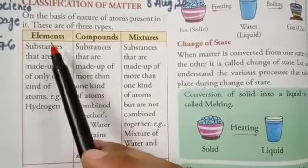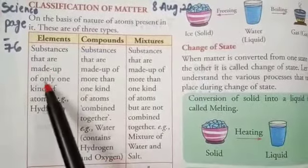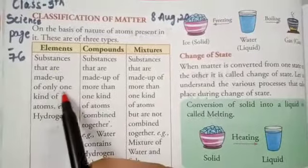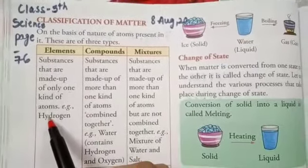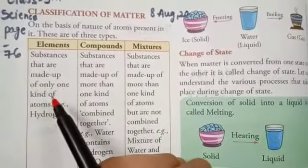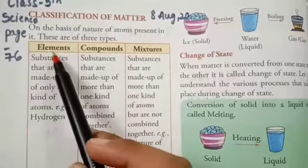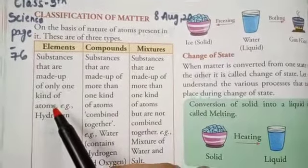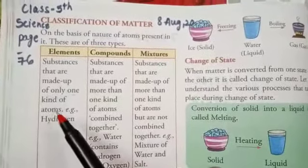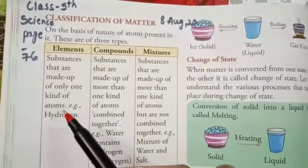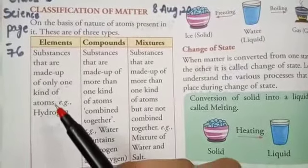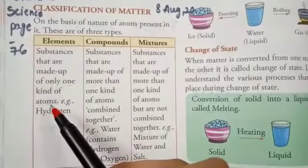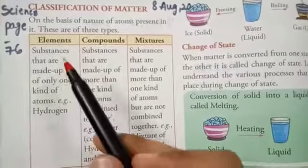The first type is elements. What are elements? Elements are substances that are made up of only one kind of atoms. Atoms are the smallest unit of matter. Like our house is made of bricks, so what are the smallest unit of our house? Bricks. What are the smallest unit of matter? Atoms. So in the same substance, the same type of atoms are combined. We call it elements.